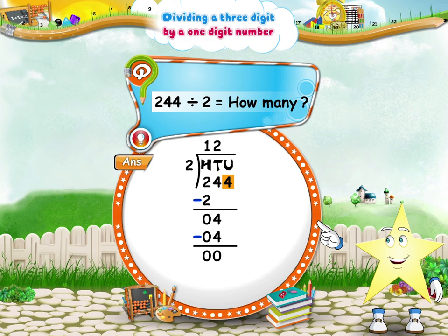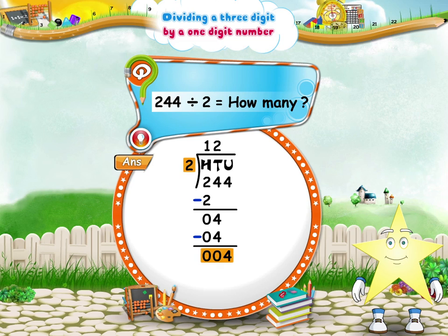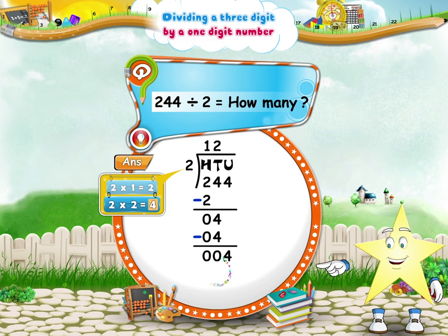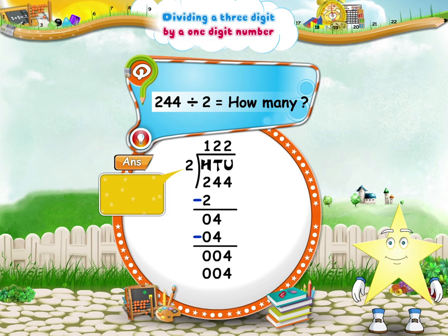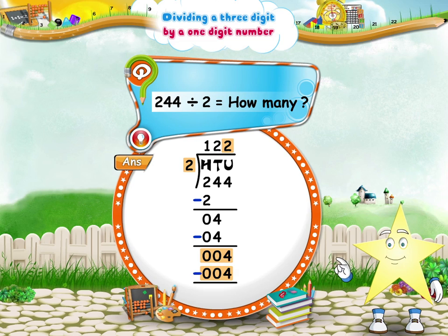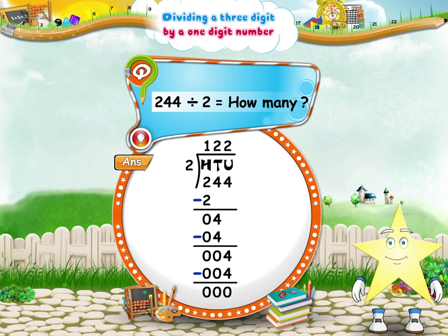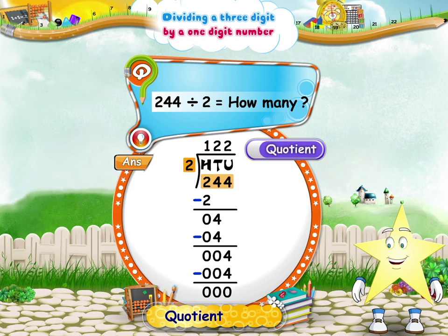Subtract the product of two and two from the four tens. The remainder is zero. Finally, bring down the four from the units place and write it at the side of zero. Say the two times table till four. Two twos are four. The quotient is two. Write it in the units place of the quotient. Subtract the product of two and two from the four units. The remainder is zero. So, Starry, when you divide the three-digit number 244 by 2, the quotient is 122.